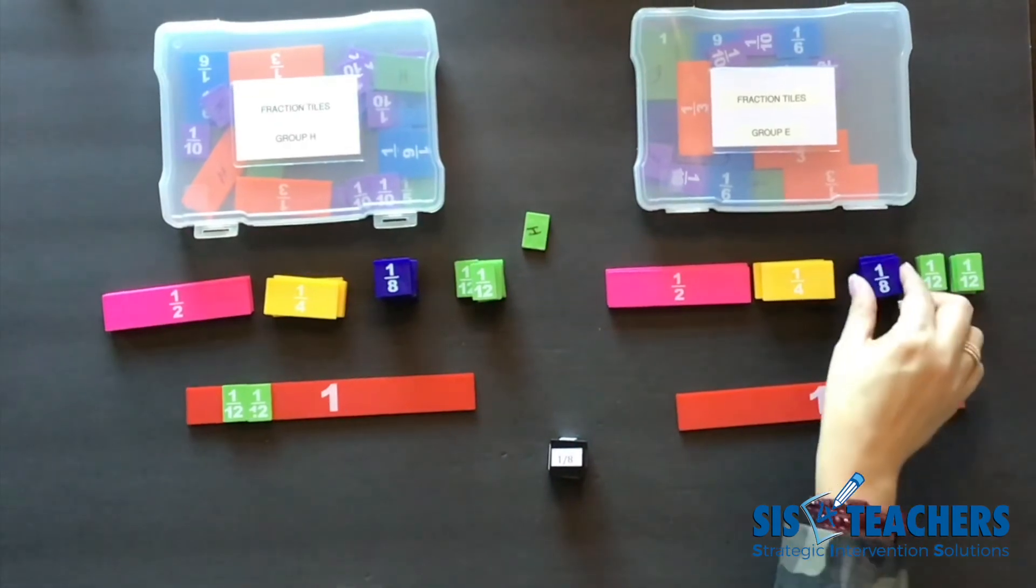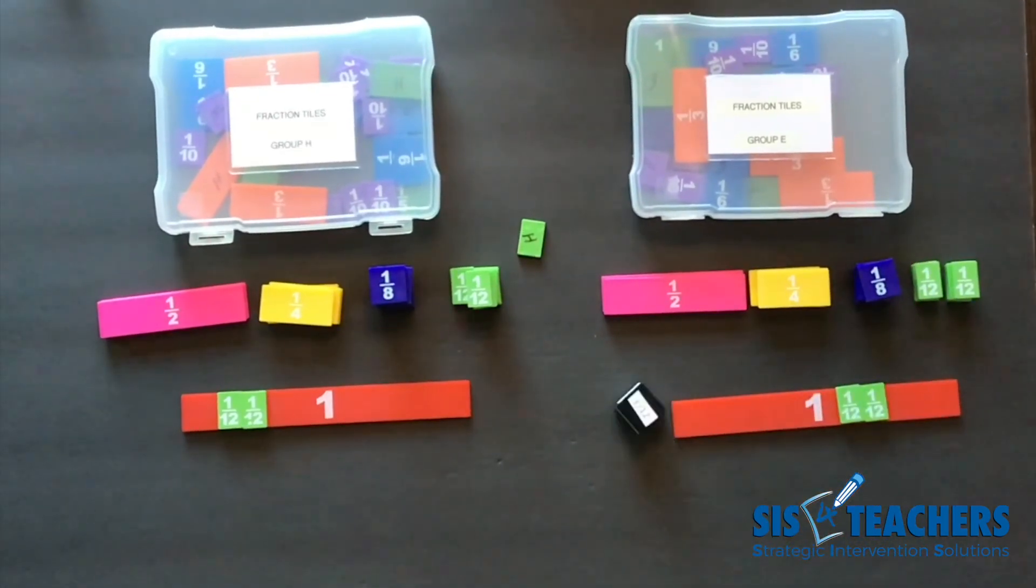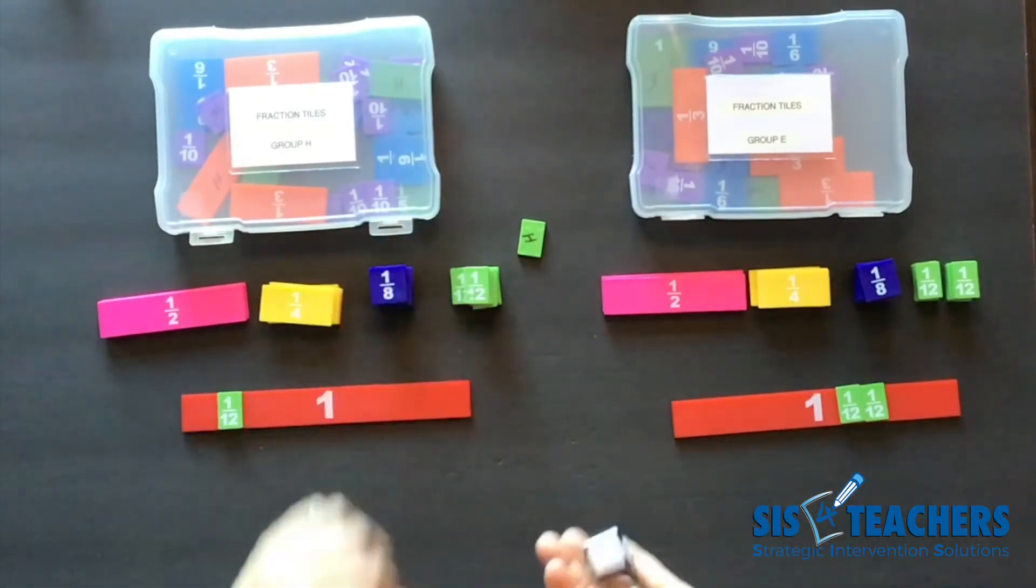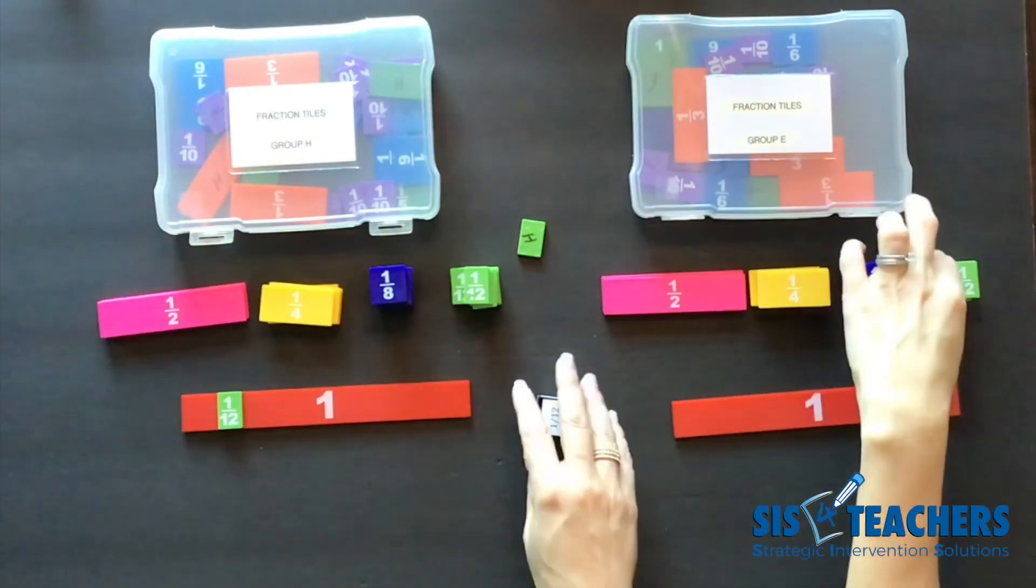I have 1/12. My partner has 1/12. I roll, get 1/4.